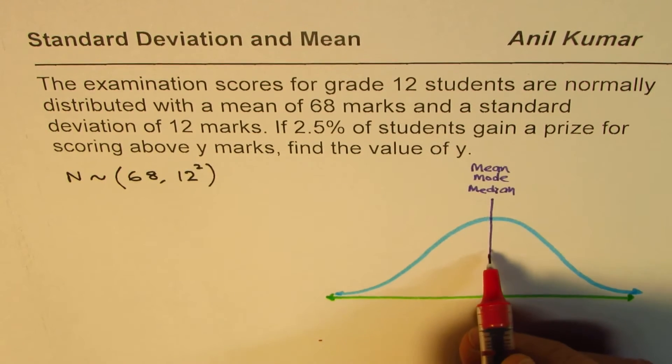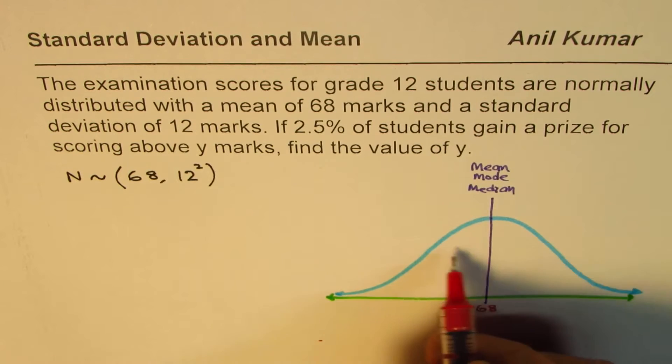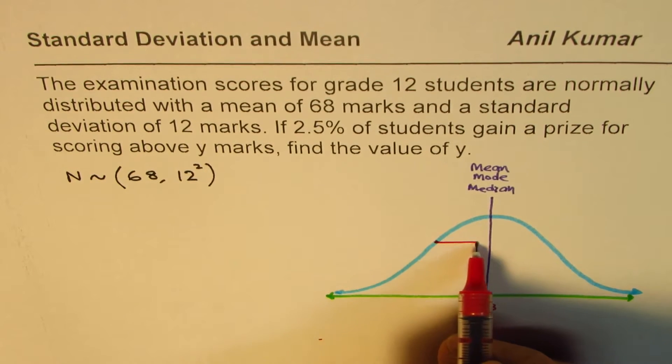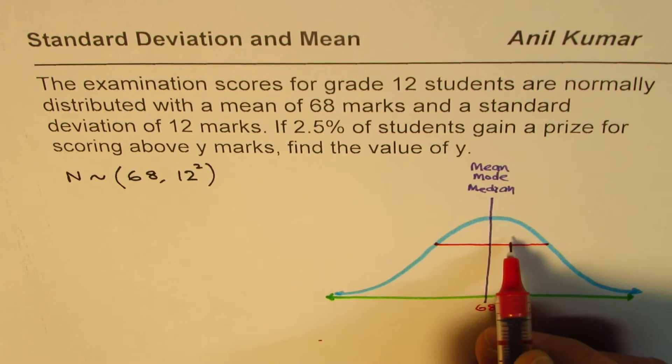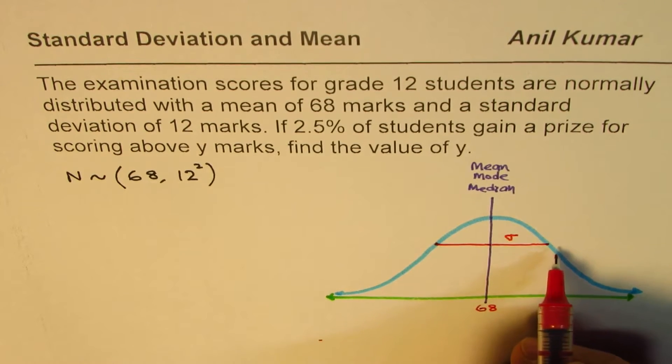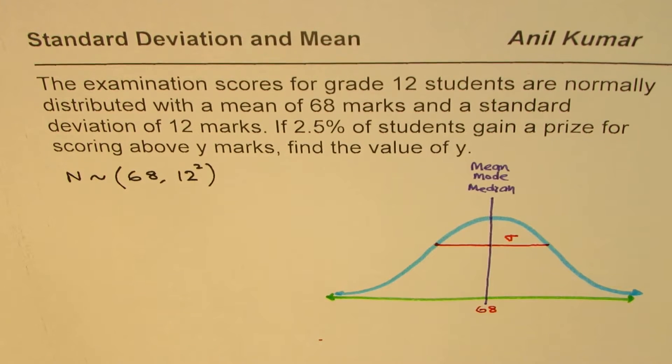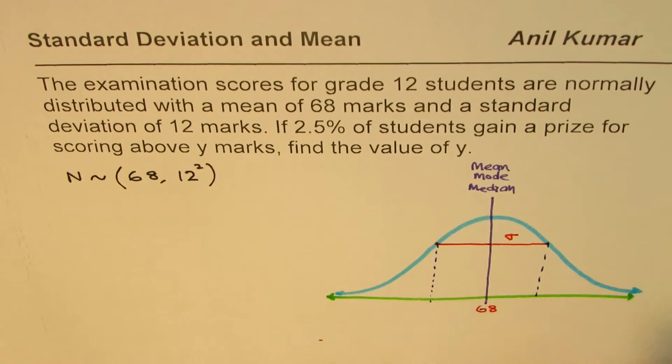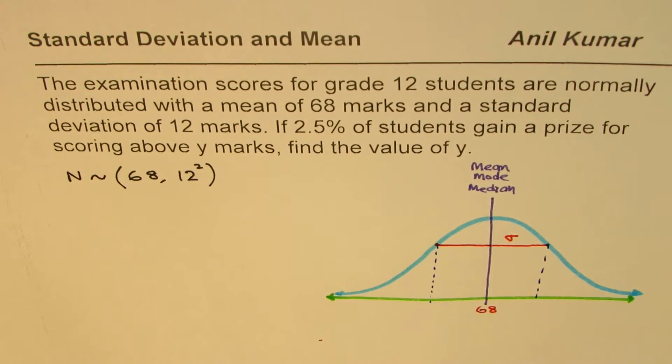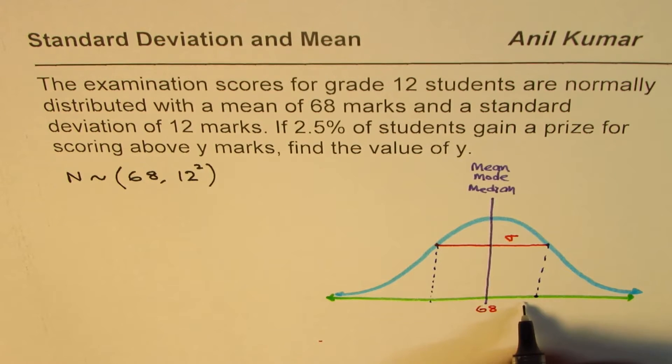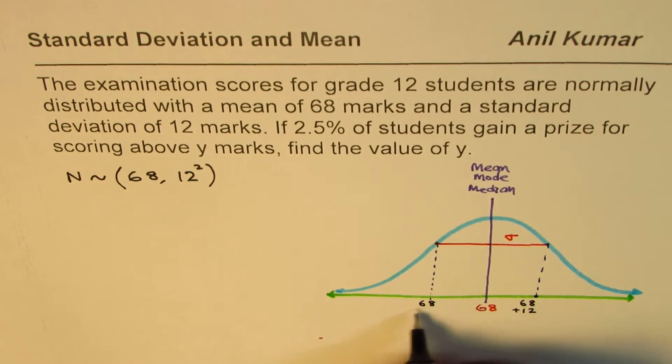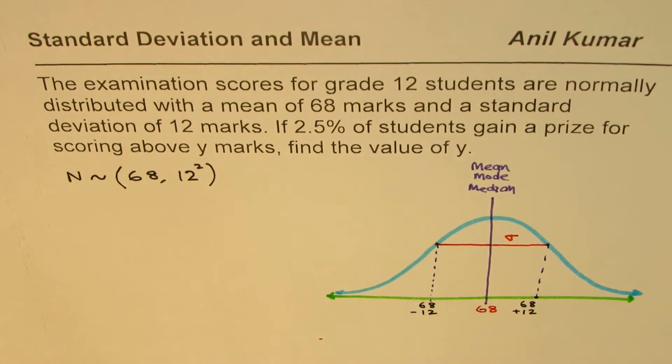The area under this curve will always be one, and you'll find it to be asymptotic at the two ends. The standard deviation, which is given to us as 12, is a point where the concavity of this curve changes - it's concave up and concave down. This is a point which is sigma or standard deviation away, which is 12 marks away. So we can drop one sigma away on either side. Since we know that standard deviation is 12, it is 12 this side and 12 that side.